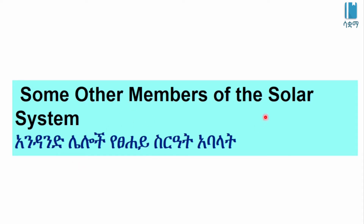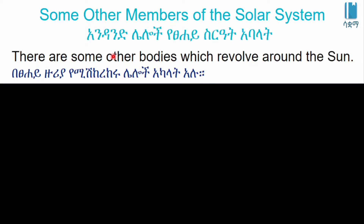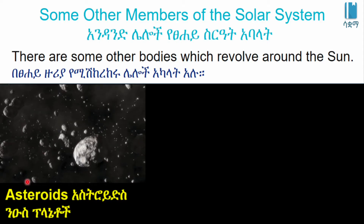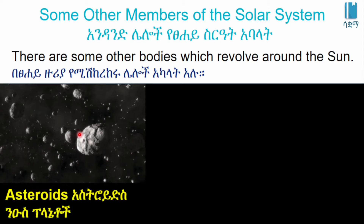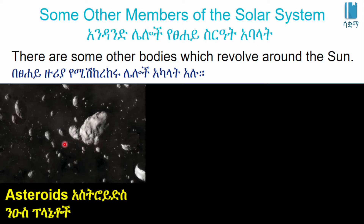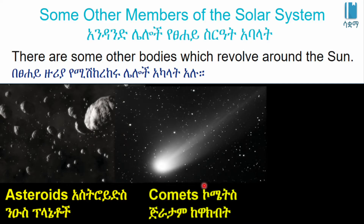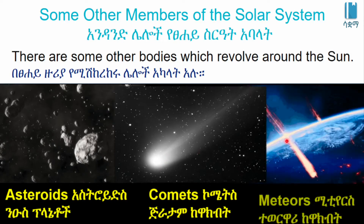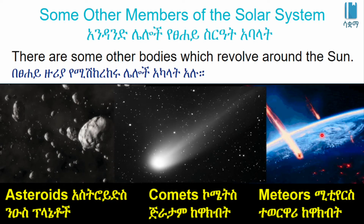Some other members of the solar system are known as bodies of the solar system. There are other bodies that revolve around the solar system, and there are some other planets around the sun.